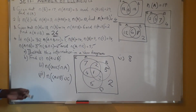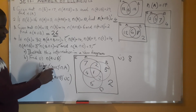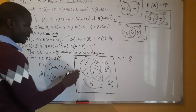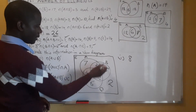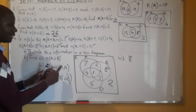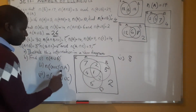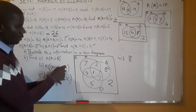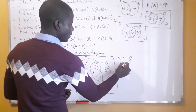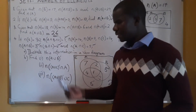Then we come to this one — the union of B and C complement. This means what is outside B and C. What is outside B and C is 7 and 2, but because we have the intersection with A, what is outside these two sets but is in A is 7. So the answer for the second sub-question is 7.